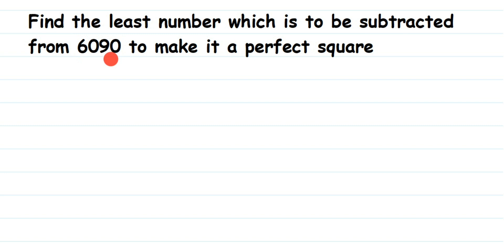Now there are two types of questions usually asked. One involves multiplying and dividing, and the other involves subtracting and adding. Whenever they ask you to find the least number to be multiplied or divided, you should use the prime factorization method. If they're asking you to find the least number to be subtracted or added, then you have to use the long division method — the method you use to find the square root.